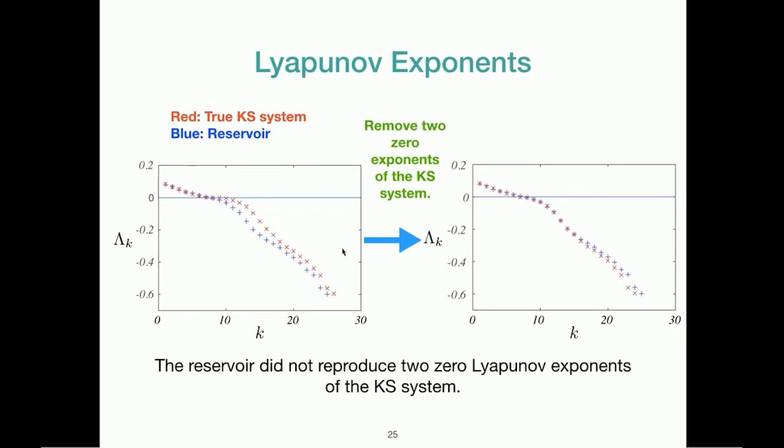But what happens is that if you remove the two zero exponents of the Kuramoto-Sivashinsky system, so if I remove these two exponents and then reorder the spectrum by size, you'll see that the Lyapunov exponents of the reservoir system fall right on top of the Lyapunov exponents of the true Kuramoto-Sivashinsky system. So from this, we conclude that the reservoir did not reproduce two zero Lyapunov exponents of the Kuramoto-Sivashinsky system. However, it was able to produce all the positive Lyapunov exponents as well as a lot of the negative Lyapunov exponents just by looking at the time series data.